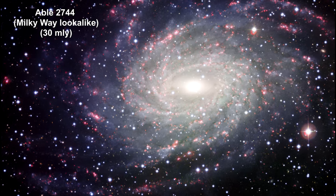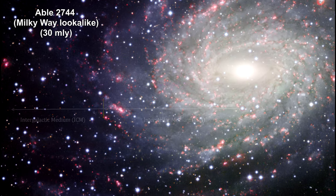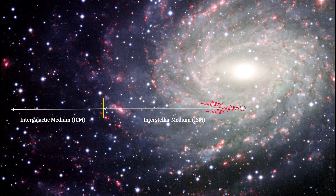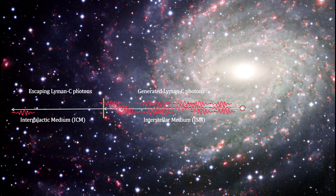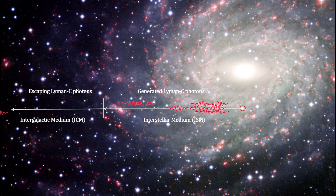All galaxies produce massive stars, which in turn produce Lyman C photons. But most stars are formed deep inside their galaxies, and the interstellar medium hydrogen gas inside these galaxies absorb nearly all the ionizing light, preventing it from escaping into the intergalactic medium, where it can re-ionize the hydrogen there.